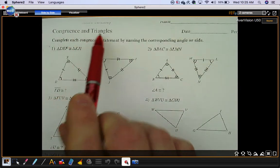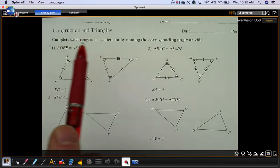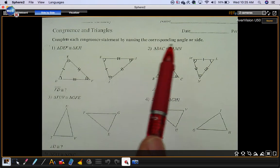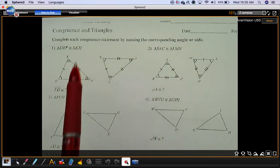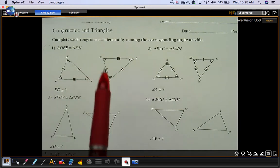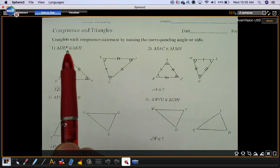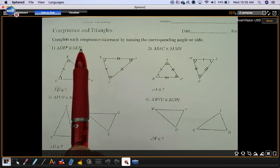This video is on the congruence and triangles worksheet. We're going to complete each congruence statement by naming the corresponding angle or side. Notice in these two triangles, they tell you six pairs of congruent parts. That means these two triangles are congruent, so you know six things.